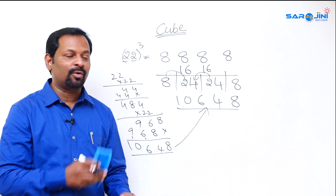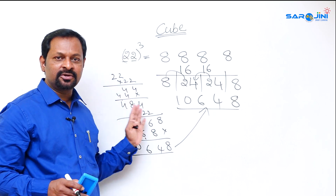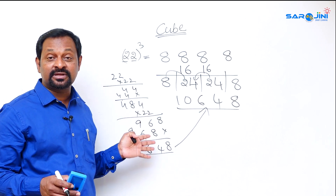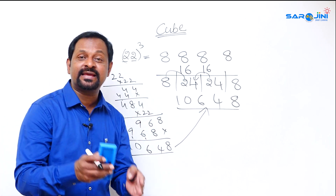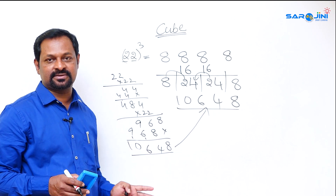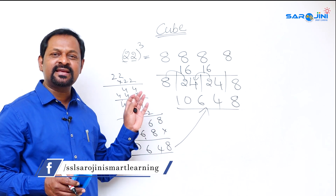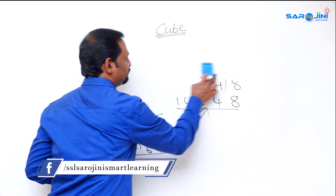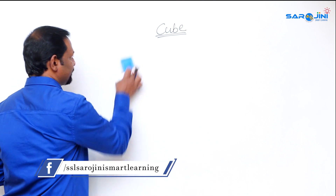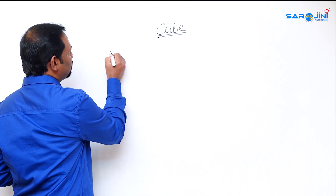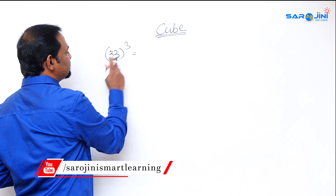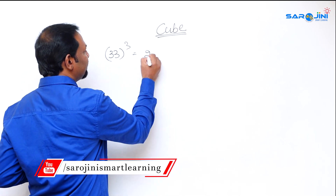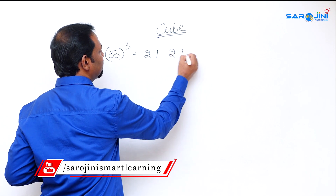Compare the speeds: this method takes about 15 seconds while regular multiplication takes 45 seconds — three to four times faster. This is the easiest method. Now let's take one more example: 33 cube. The digit is 3 and 3 cube is 27.